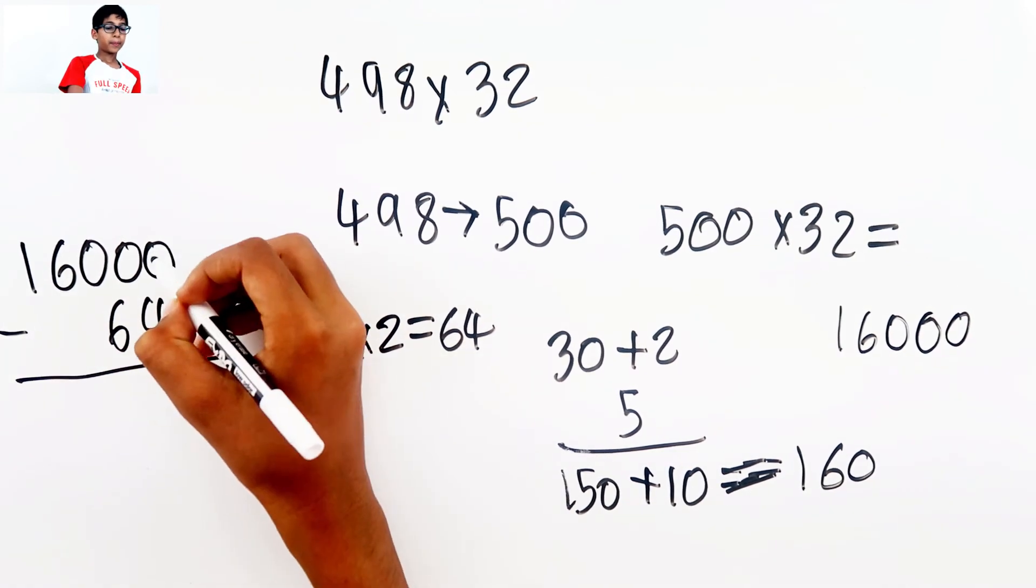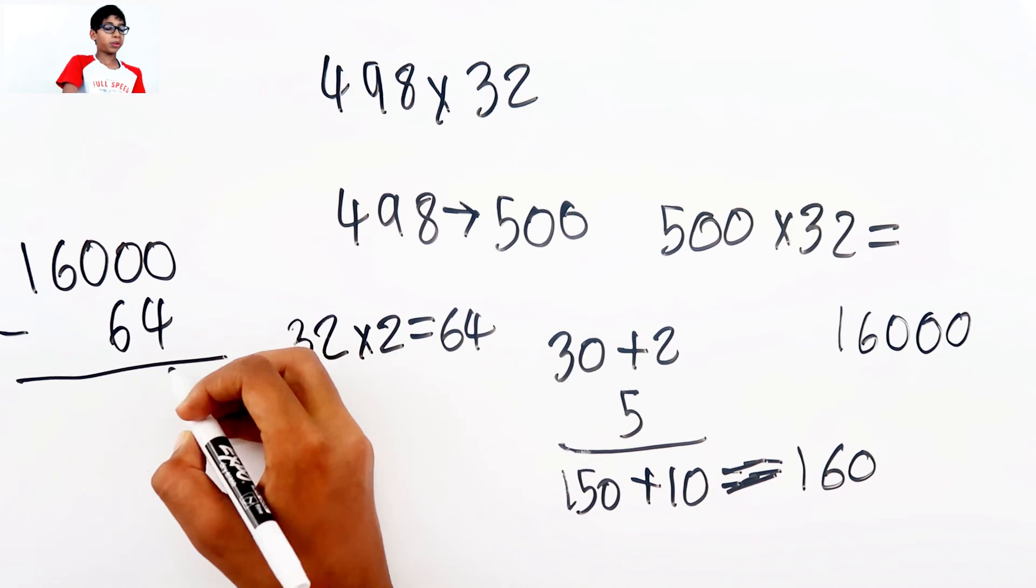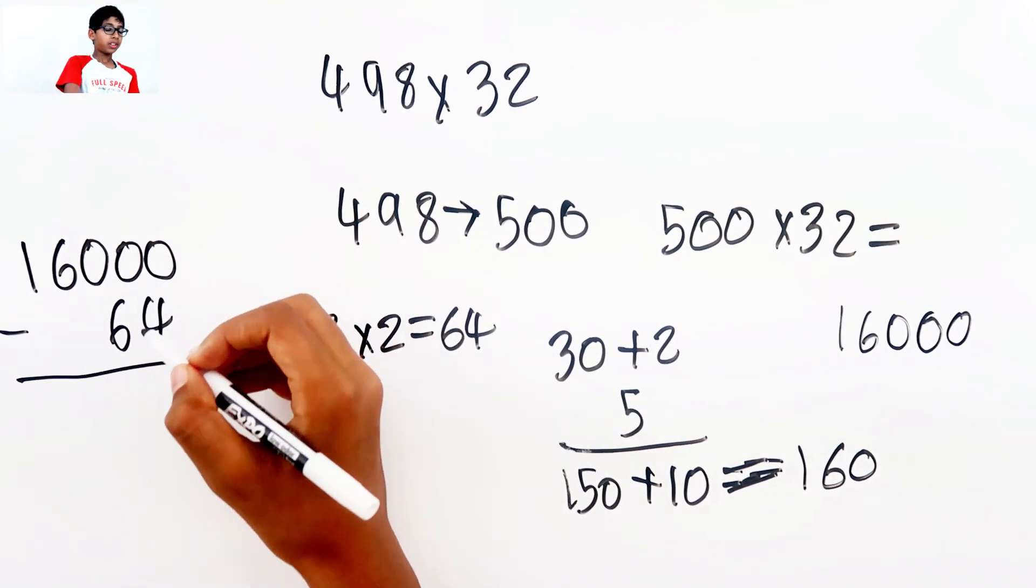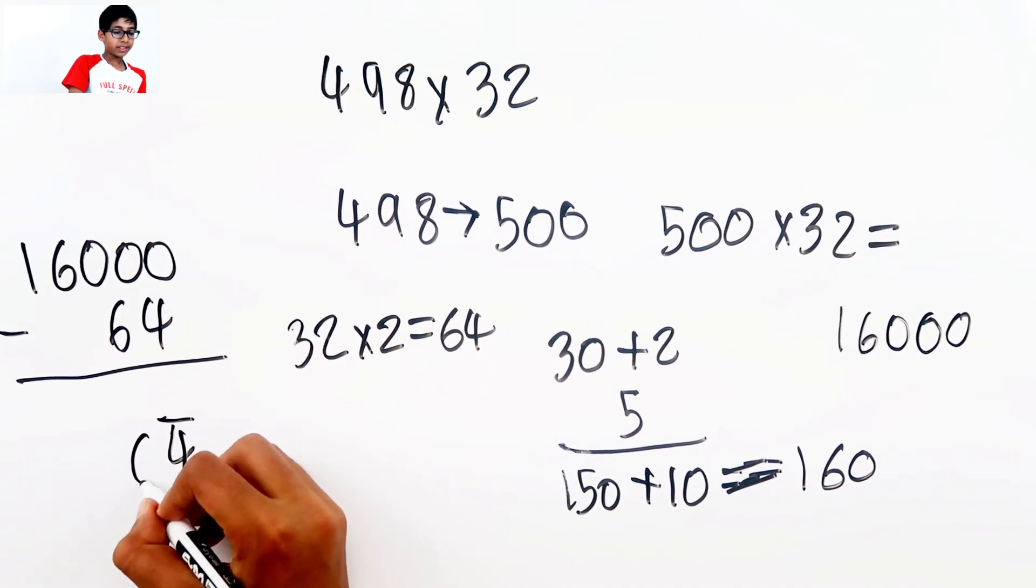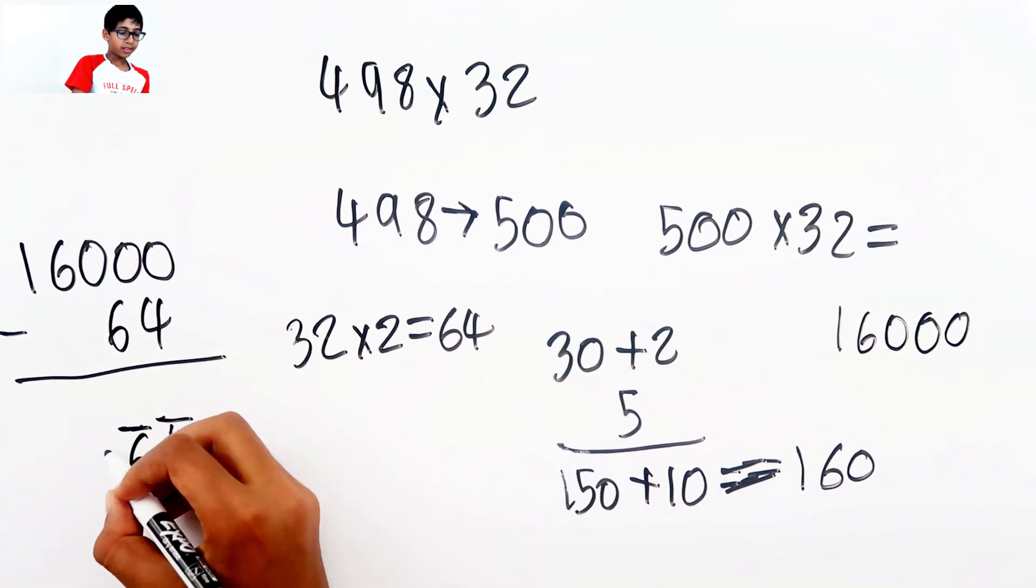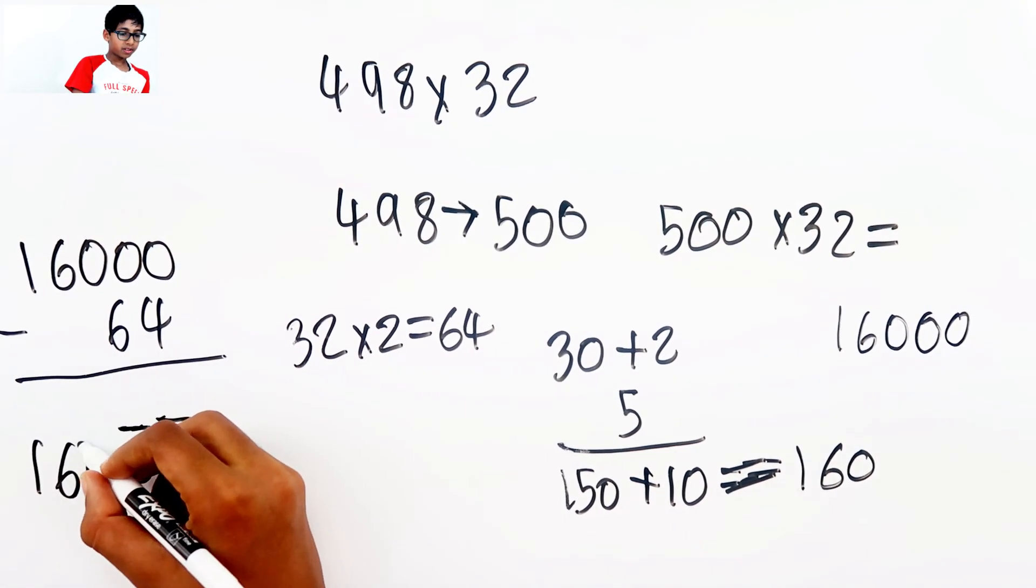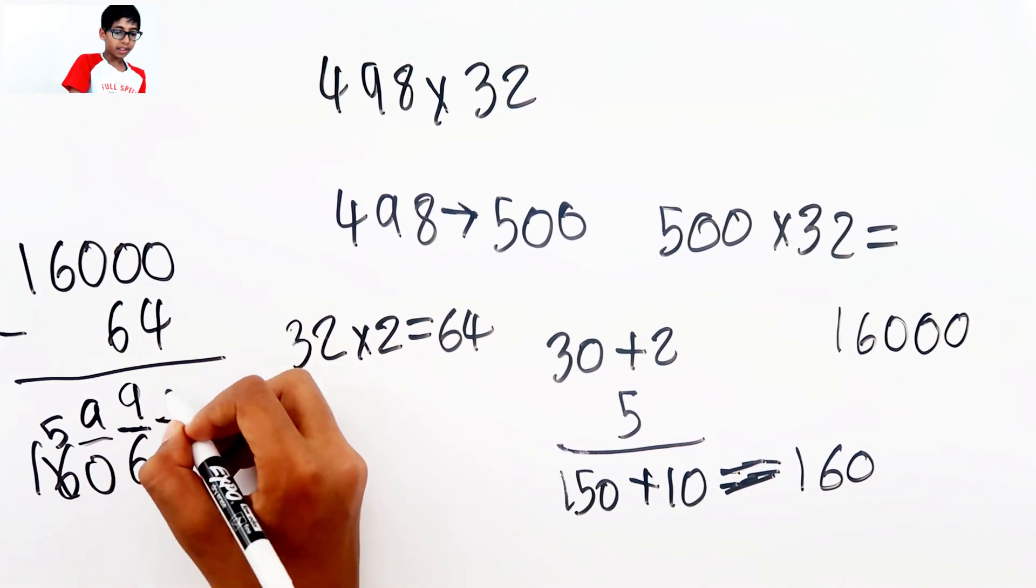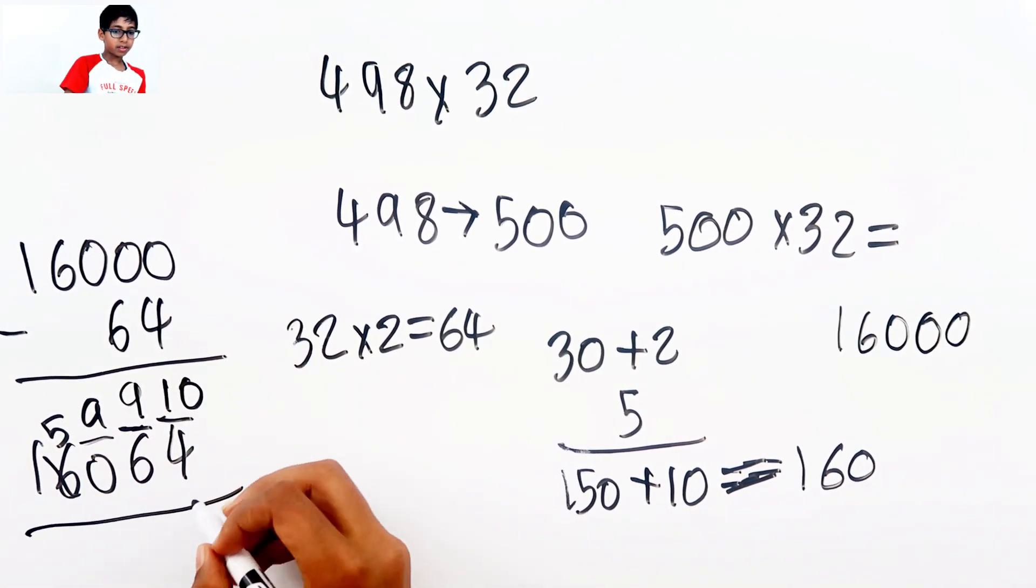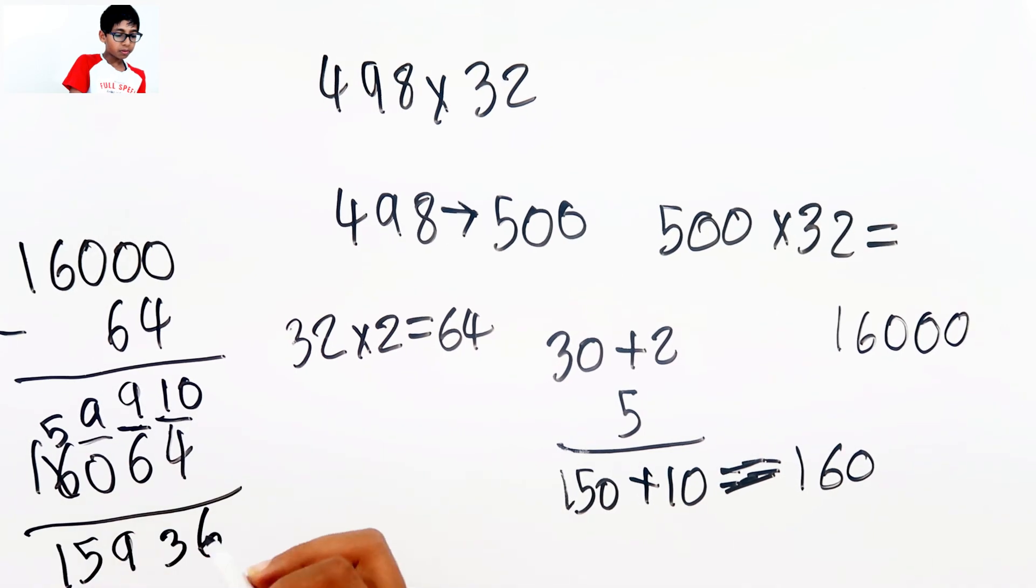Let's do it in the bar method. So 4, bar, 6, bar, 0, 1, bar, 5, 9, 9, 10. So 6, 3, 9, 5, 1.